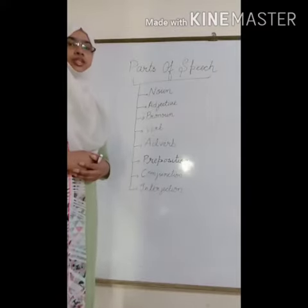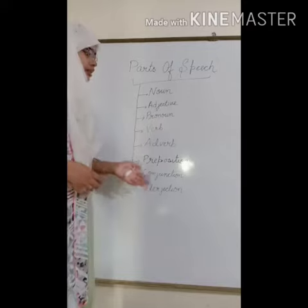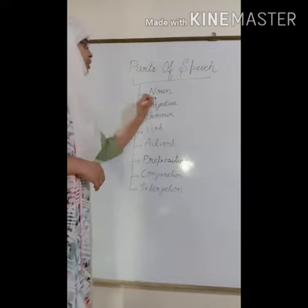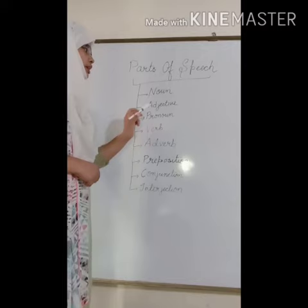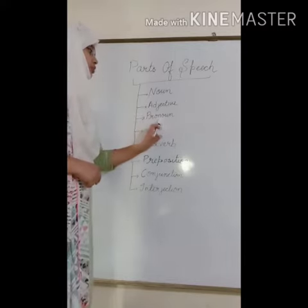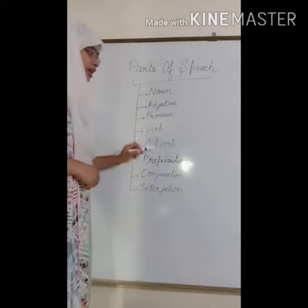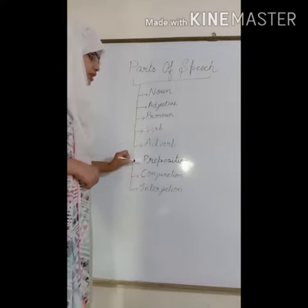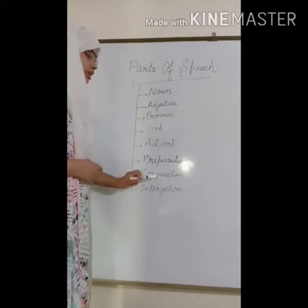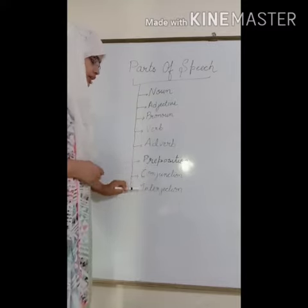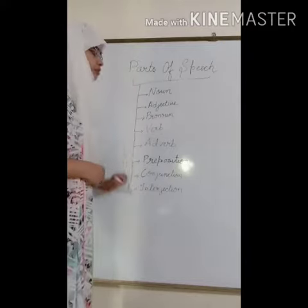There are eight parts of speech. Number one is noun, second adjective, third pronoun, fourth verb, fifth adverb, sixth preposition, seventh conjunction, and eighth interjection. So these are the eight parts of speech.